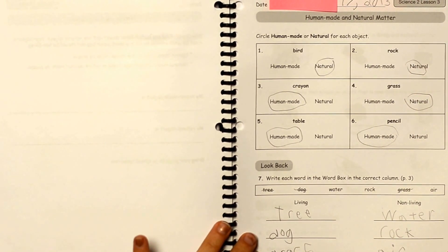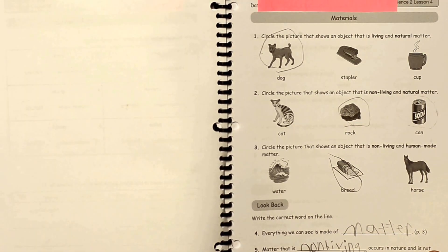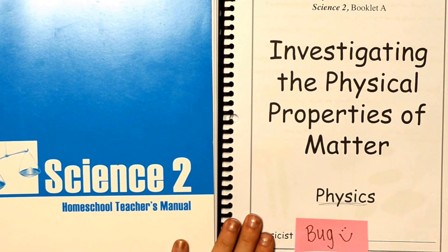They've got a look back section that will cover the information from previous lessons so that way you're not forgetting the things you're learning throughout the year. So those are the student pages for Nancy Larson Science 2.